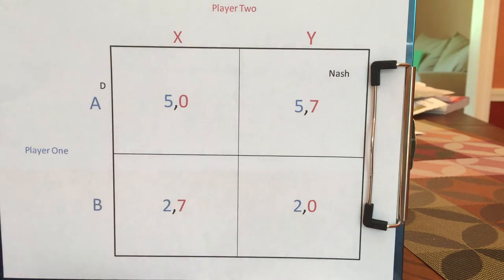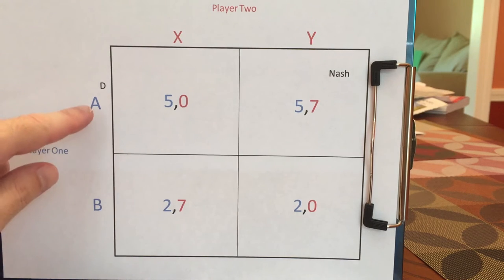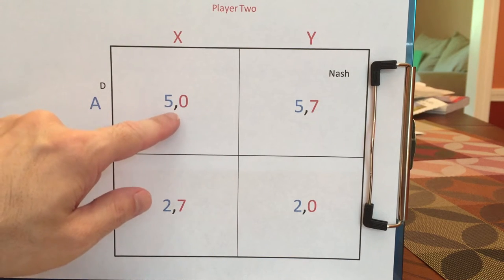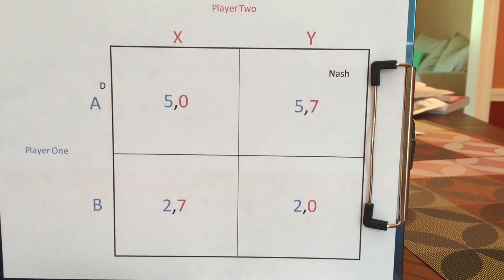AX, however, is not a Nash Equilibrium, and let's see why. Player one doesn't regret, but player two does. If the parties end up here, player two would say...